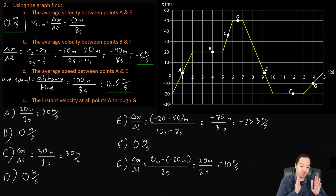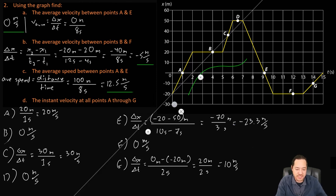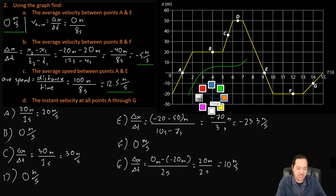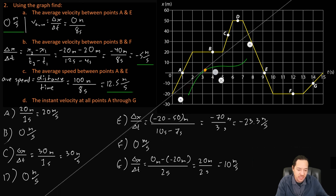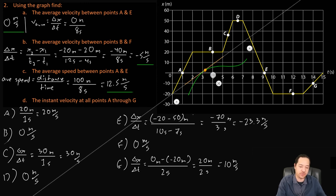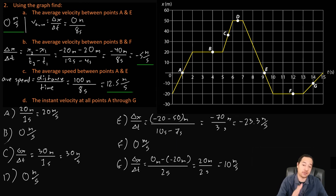Now we can see how to read a graph for instantaneous velocity. Normally if the graph is curving, it's not obvious what the tangent line will be — you'd have to find it graphically, which is not so simple. But for this question the graph isn't curving at any of the labeled points, so the tangent line at each point has the same slope as the straight line segment there.